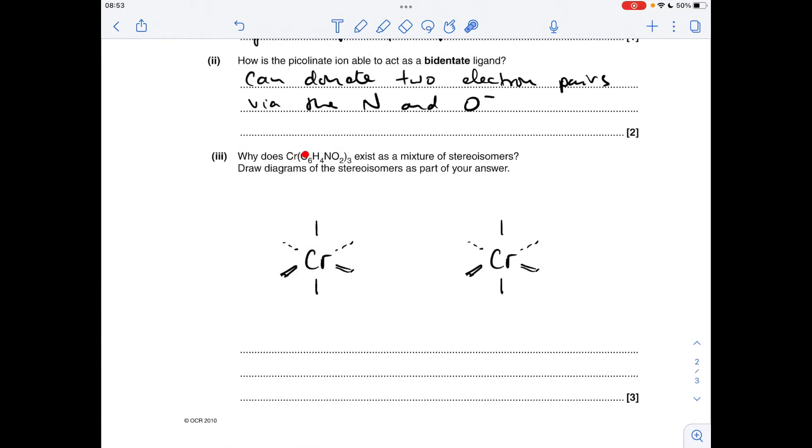And the final part of D, why does this exist as a mixture of stereoisomers? You'll notice I've already drawn up my empty octahedra, so all I'm going to do is show the ligands. So I'm just doing a very simplified version of the ligand. Remember, they attach via the nitrogen and the O⁻ minus. I'll just do the first one.